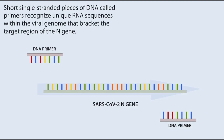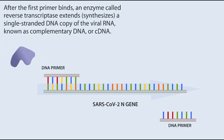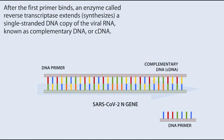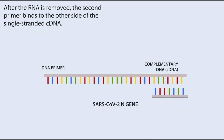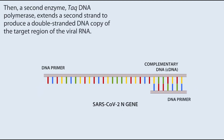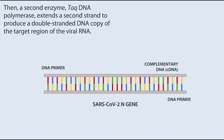Short, single-stranded pieces of DNA called primers recognize unique RNA sequences within the viral genome that bracket the target region of the N-gene. After the first primer binds, an enzyme called reverse transcriptase extends and synthesizes a single-stranded DNA copy of the viral RNA known as complementary DNA, or cDNA. After the RNA is removed, the second primer binds to the other side of the single-stranded cDNA. Then a second enzyme, TAC DNA polymerase, extends a second strand to produce the double-stranded DNA copy of the target region of the viral RNA.